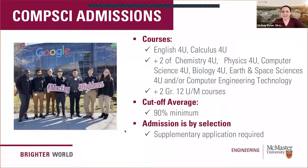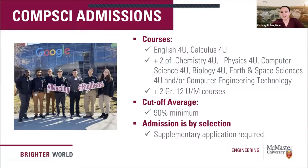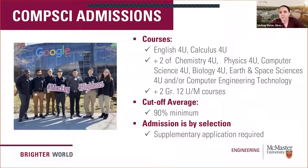For admissions requirements for Ontario students: admission to computer science is fairly competitive — even though the program is growing, we have far more applications than spots. We require English, Calculus, plus two courses from: chemistry, physics, computer science, biology, earth and space sciences, or computer engineering technology. We need two more grade 12 courses to round out a six-course average. The minimum expected cutoff is 90%, though the actual cutoff to be competitive is usually two to three percent higher.